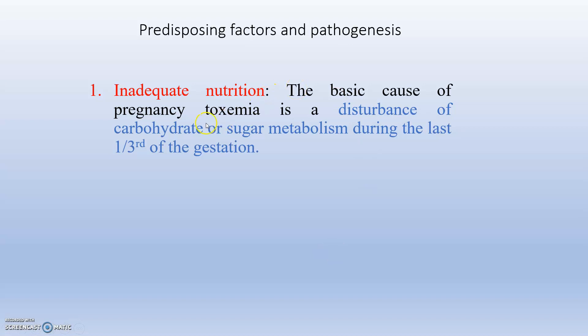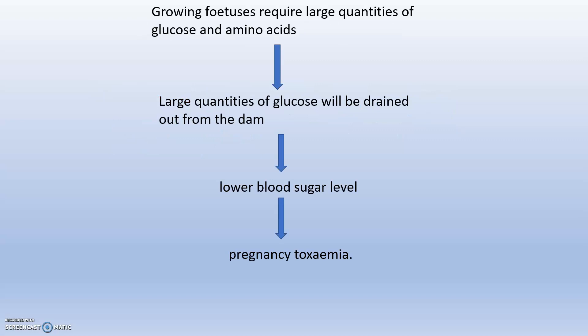The first predisposing factor is inadequate nutrition. During the last period of gestation, if nutrition is inadequate, there is disturbance of carbohydrate metabolism, because the growing fetuses require large quantities of glucose and amino acids. These are drained from the dam's blood, causing blood sugar levels to decrease, leading to excessive lipid metabolism and ultimately pregnancy toxemia.